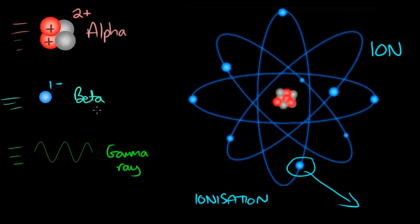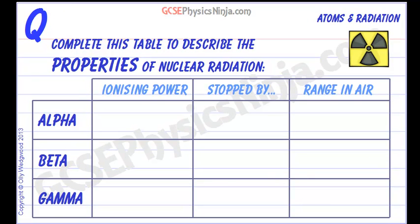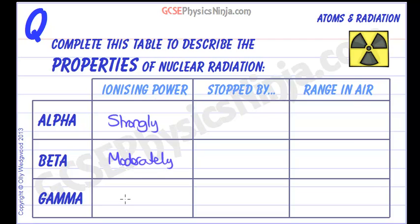Because of the strongly ionizing alpha particle and moderately ionizing beta particle, we can summarize the properties of these three in a table. In terms of ionizing power: alpha particles are strongly ionizing, beta particles are moderately ionizing, and gamma waves are weakly ionizing.